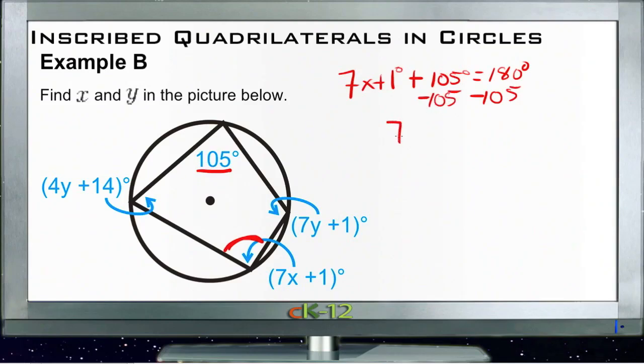And we'll get 7x plus 1 equals 75. Subtract 1 from both sides. And we get 7x equals 74. So now we just need to divide both sides by 7.